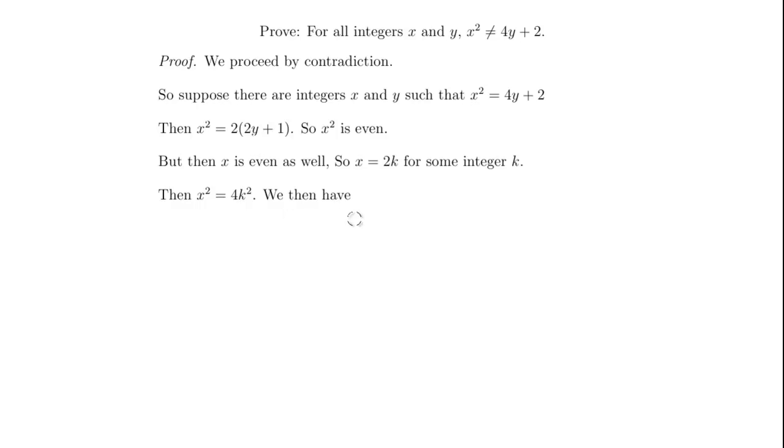So we then have that 4k squared is equal to 2 times 2y plus 1, having the factored form of our equation from up here.